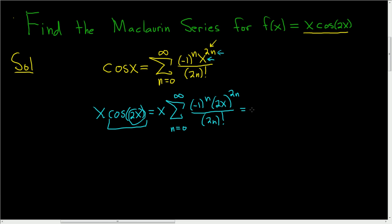Let's keep going. This equals x times the infinite sum, as n runs from 0 to infinity, of (-1)^n. Now, (2x)^(2n) can be written as 2^(2n) · x^(2n) using properties of exponents. In the denominator, we still have (2n)!.